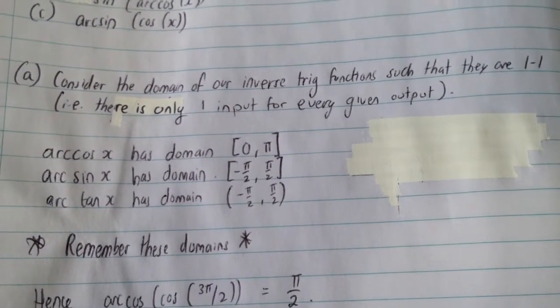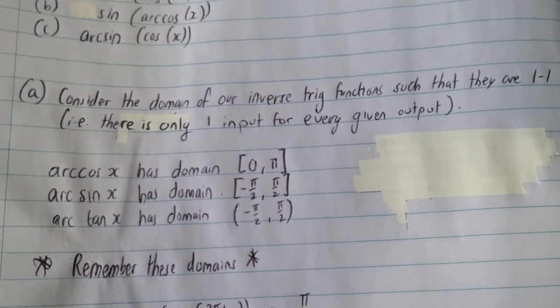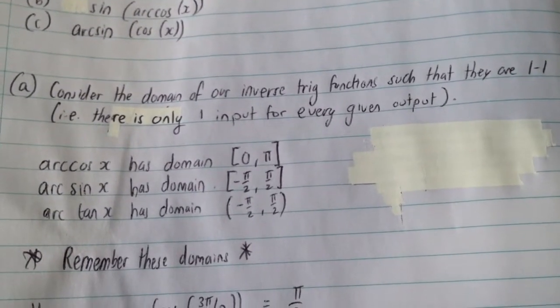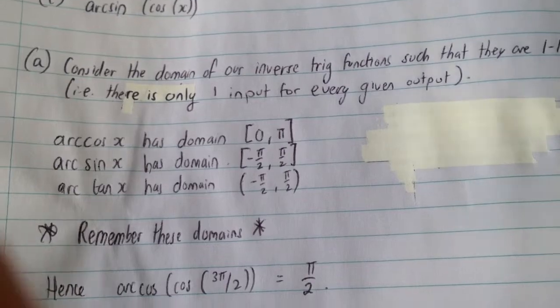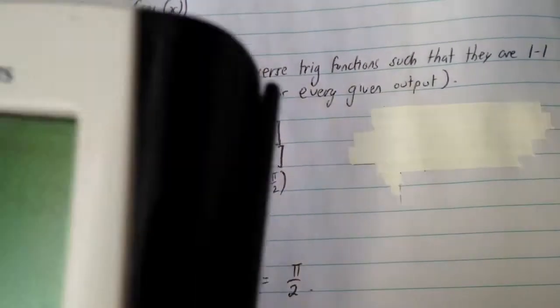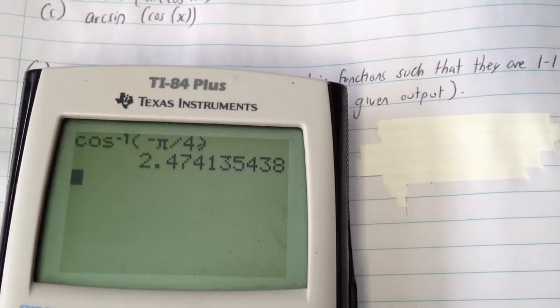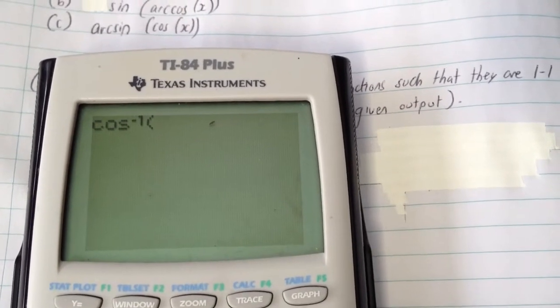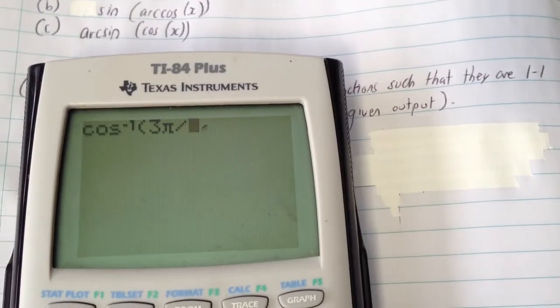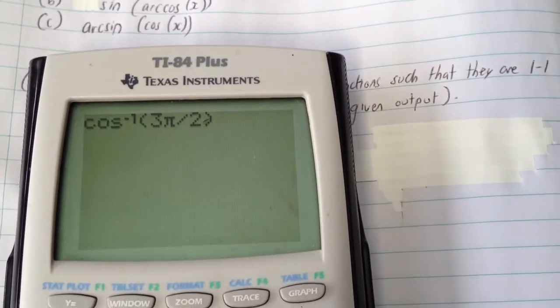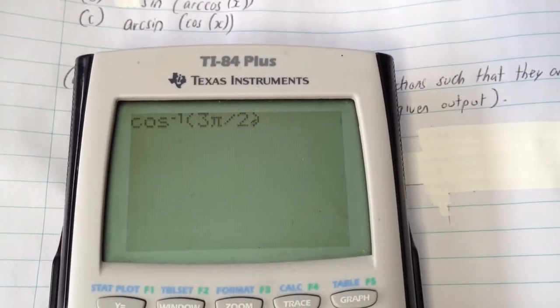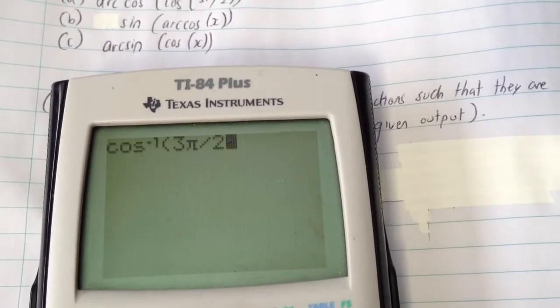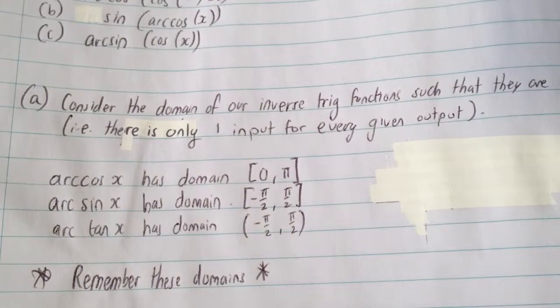So first off, let's start with A. We need to consider the domain in this case, because we're considering arccos, and we've got to consider the domain of these inverse trig functions such that they are one to one. So depending on whether you've worked with your calculator before or not, and actually explored these functions in detail, you may notice if you type in cosine inverse or arccos of 3π/2, you get a domain error.